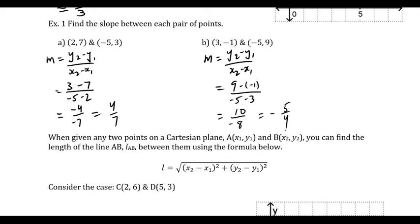For the next one, I got 10 over negative 8, which simplifies to negative 5 over 4. We want the negative sign out front — the slope is negative, meaning it slopes down to the right, up to the left. And 10 over 8 simplifies to 5 over 4 by dividing both by 2. That's review from grade 9, but it applies to what we're doing next. It's our first tool in our tool belt for this unit.